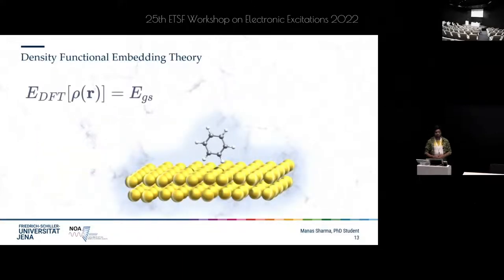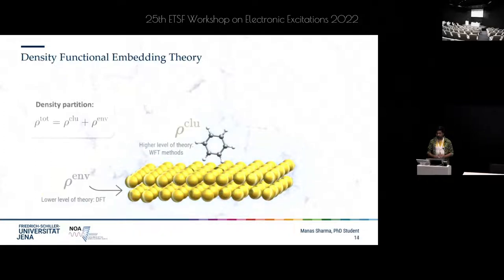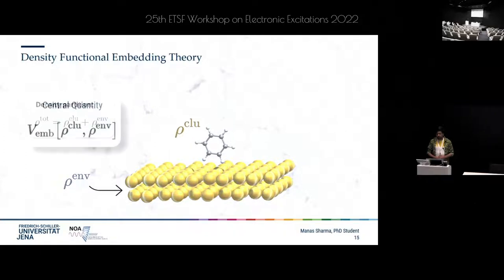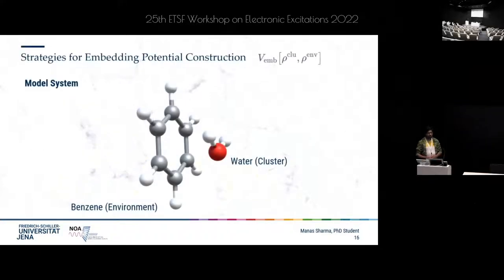The solution to all these problems comes quite naturally within the framework of density functional theory, where you can partition the density of the total hybrid system into a cluster density and an environment density. The influence of the environment onto the cluster can be taken in the form of an embedding potential, which is a function of both the cluster and environment density. Various strategies to construct this embedding potential have been implemented.